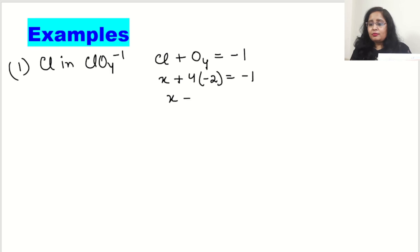Now x minus 8 is equal to minus 1. Then x is equal to plus 8 minus 1. And here it comes plus 7. And this is the oxidation state of chlorine in ClO4 minus 1.